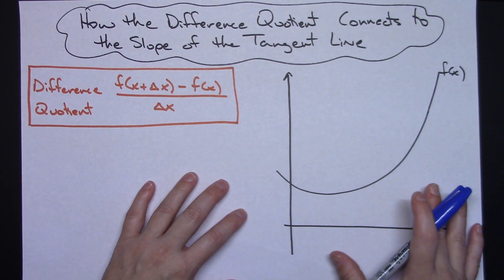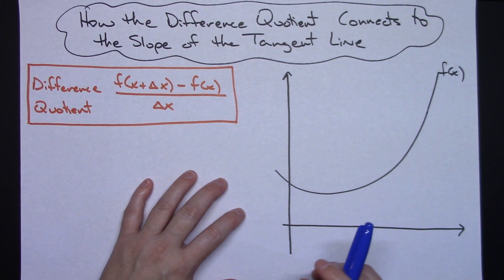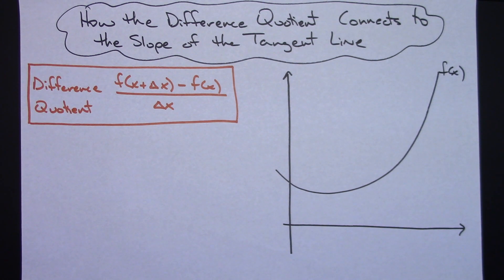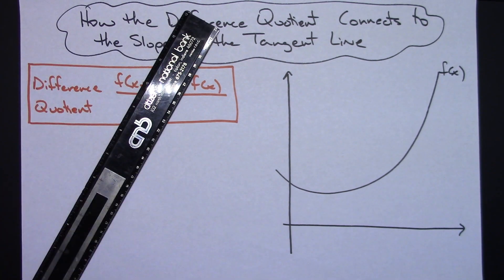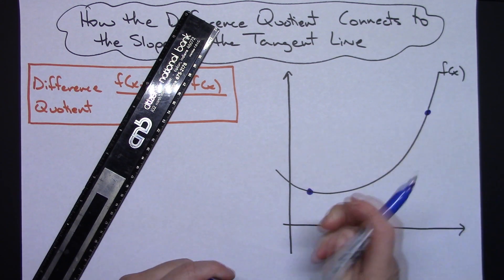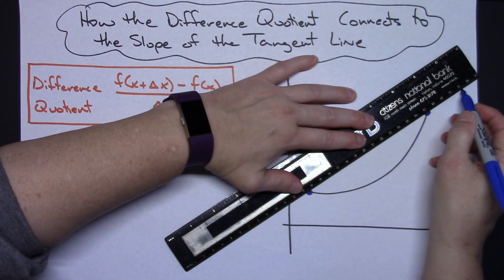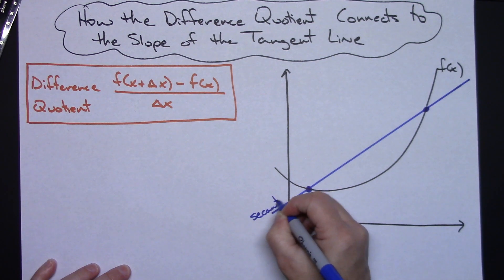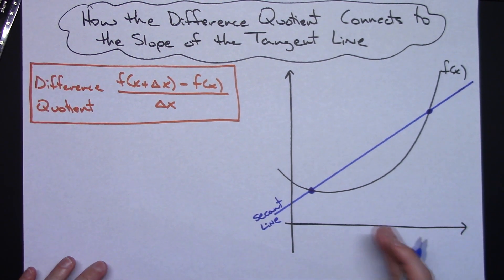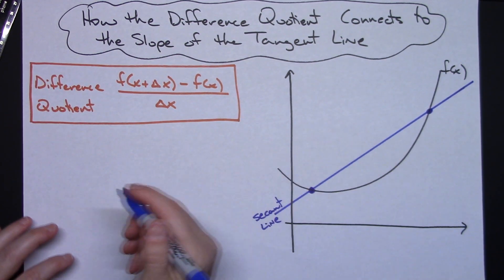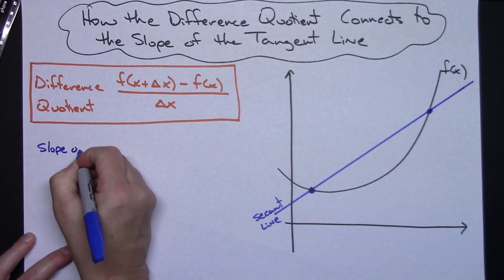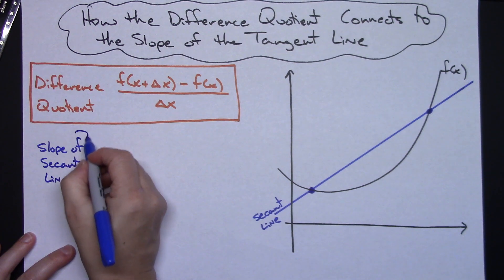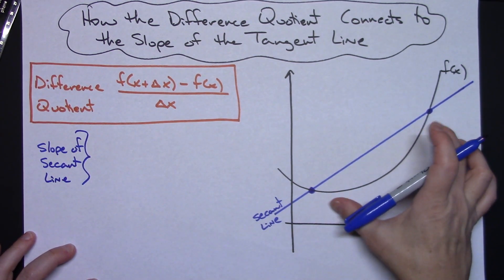So what I'm going to do is show you what that really is. Let's say I've got some function f of x here and I want to put a secant line on it — a random secant line on my function. That's a secant line — it goes through two points on the curve. Now in general, how do you find the slope of the secant line? How do you find the slope of any line?